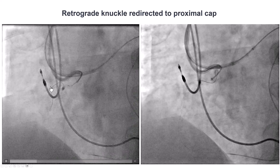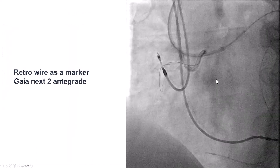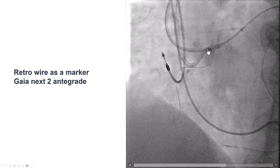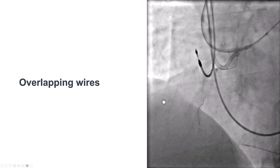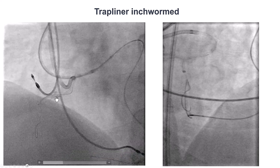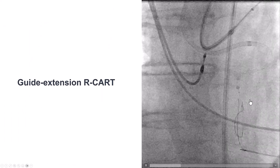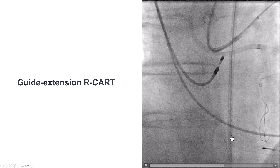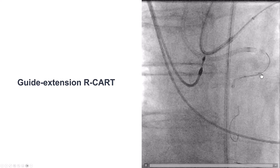Eventually, we inserted the retrograde knuckle wire a little bit closer to the proximal cap and then tried to use another antegrade guide wire — a Gaia Next 2 advanced antegrade. After multiple attempts, we were able to make the antegrade wire knuckle along the course of the retrograde guide wire, achieving overlapping guide wires. We advanced the guide extension using the inchworm technique further down into the occlusion, and were then able to advance the retrograde guide wire using the guide extension reverse CART technique into the antegrade guide extension. This was the turning point — the retrograde wire entering the antegrade guide extension.